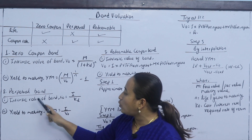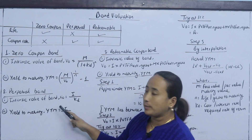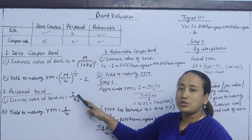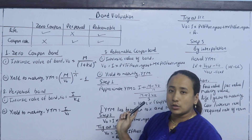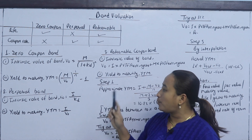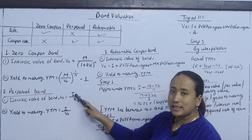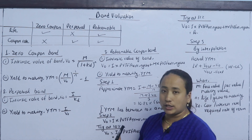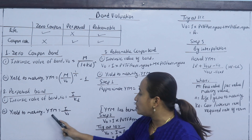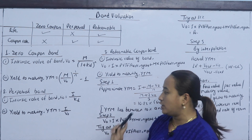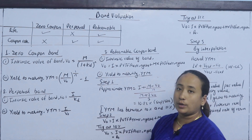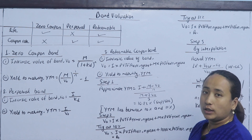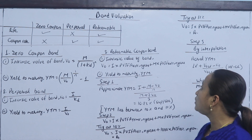The intrinsic value of the bond is V0. For a perpetual bond, V0 equals I divided by kd, where I is the interest amount. The yield to maturity (YTM) for a perpetual bond is I divided by V0.